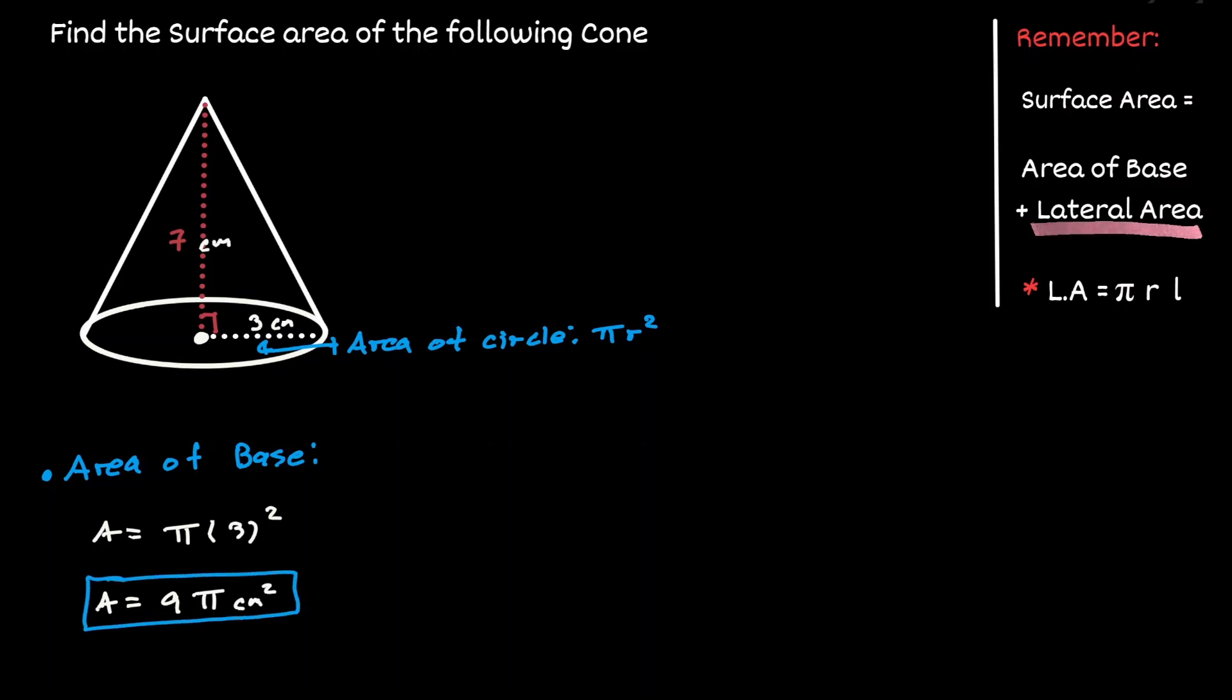Now to define the lateral area, which is the section on top of the circle, we first need to define the lateral height, which refers to the height that is slanted on the outside of the cone. Notice that when we consider that side of the cone, we can create a right triangle using the measurements of 7 and 3. Then we can use the Pythagorean theorem to define the lateral height. We will have 3 squared plus 7 squared equals the lateral height squared.